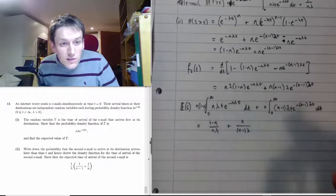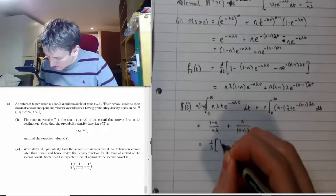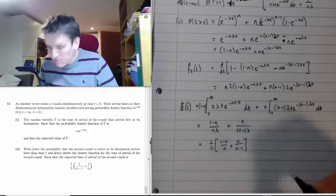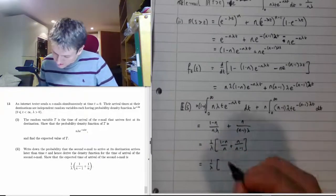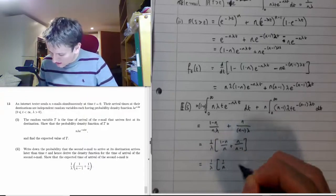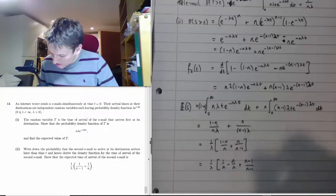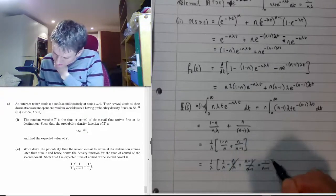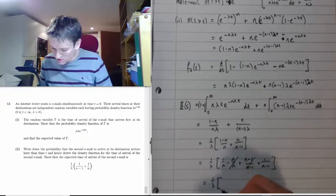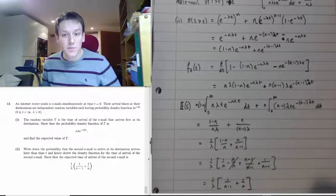We now have E[S] = (1/λ)·[(1−n)/n + n/(n−1)]. Writing (1−n)/n as 1/n − 1 and n/(n−1) as 1 + 1/(n−1), the two ±1 terms cancel, leaving E[S] = (1/λ)·[1/(n−1) + 1/n], which is exactly the expression given in the question.